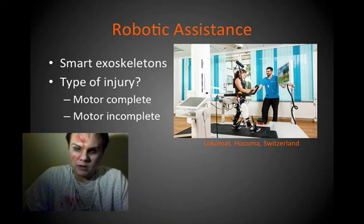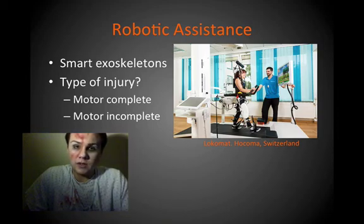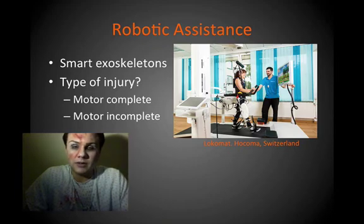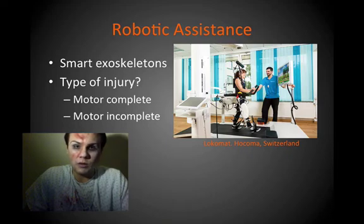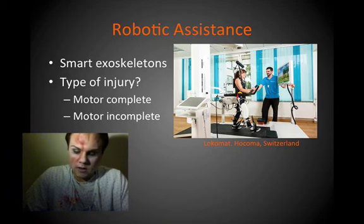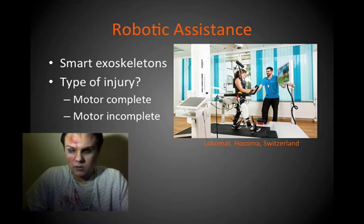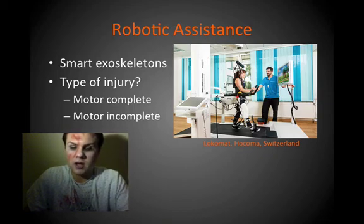One company pictured here, the Lokomat out of Switzerland, is able to sense where the individual's center of mass is. With a shift to the right, the robotic orthoses would then initiate a left swing phase. It is highly sensitive to changes in the patient's body and effective at initiating movement to get them to participate in gait training. I'll also discuss the hybrid assistive limb exoskeleton pictured on screen and a different type of feedback on the next slide.